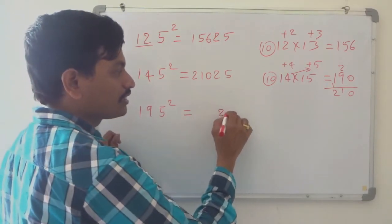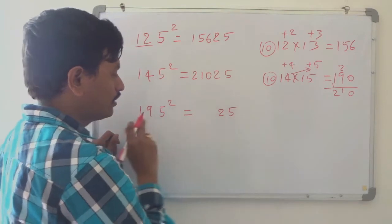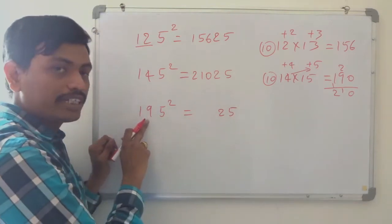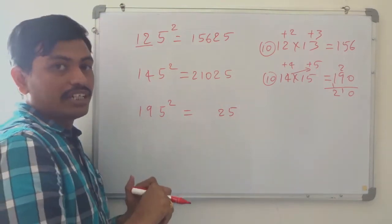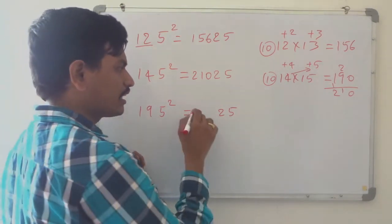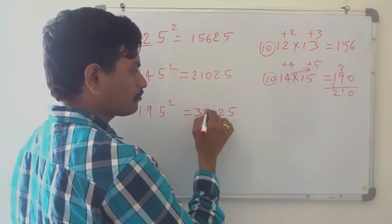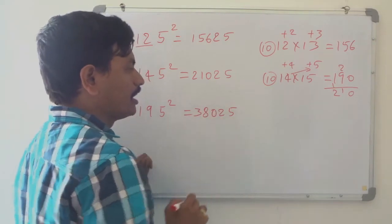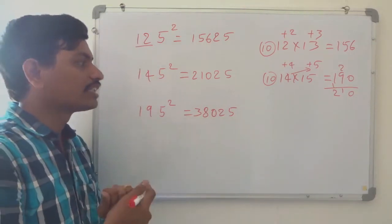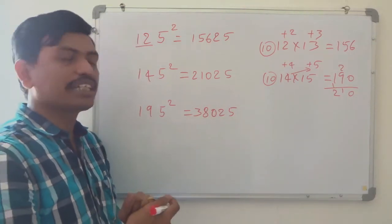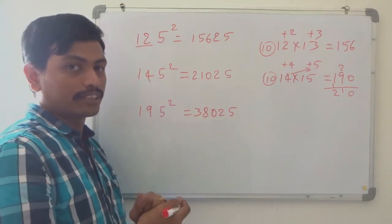Here the last 2 digits are 25. We need to find 19 into 20, which is very easy — 380. So 195 squared is 38025.